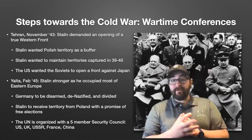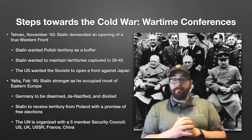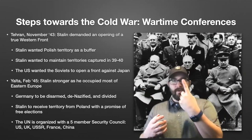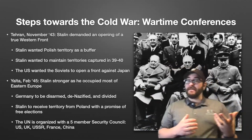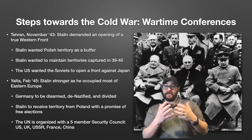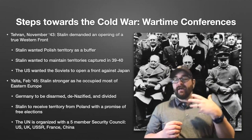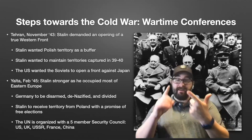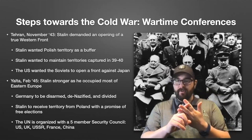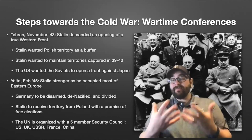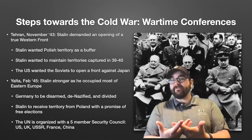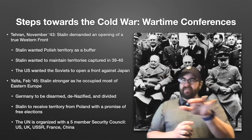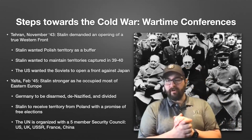Tehran in November of 1943: Stalin is still demanding the opening of a Western Front. He's also making claims on territory — he wants Polish territory as a buffer state between the Soviet Union and Germany, and he wants to maintain the territories he captured in 1939 and 1940, like Lithuania, Latvia, and Estonia. For their part, the United States wants the Soviet Union to join the fight against Japan, which Stalin promises to do once the war in Europe is over.